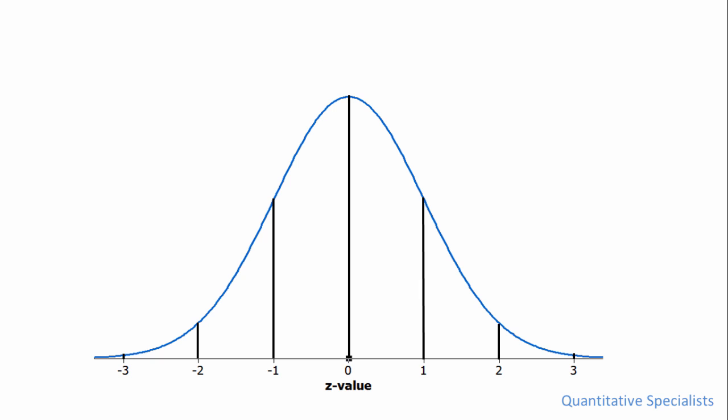Next, notice that to the right the values increase where we have a z of one and then of two and then three. And then to the left we have a z of negative one, negative two, and negative three.